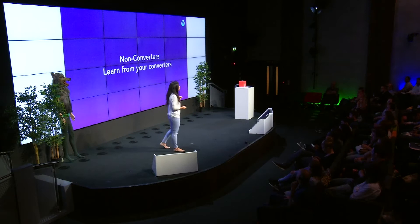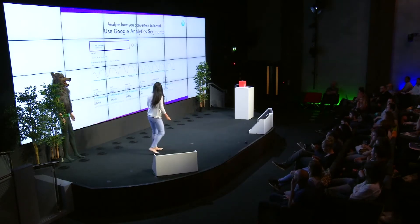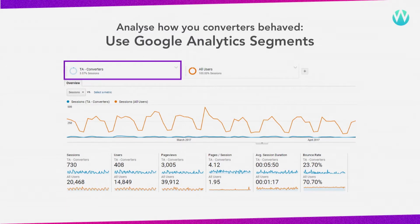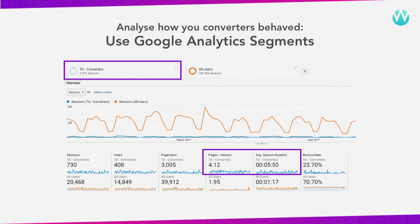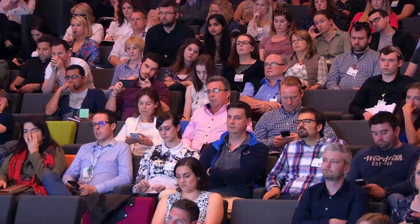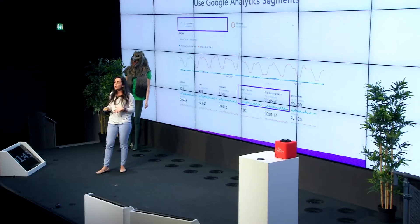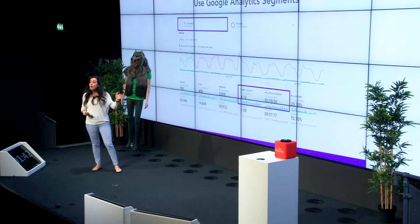Let's look at your non-converters first. The truth is that people can go to your website and never come back. So how do you find your real valuable users here? You need to start learning from your converters. Start using Google Analytics segments. In this example, we have created a segment for users who converted, and we're using it to compare how they behave differently from the average user. You will see that converters actually spend way more time on the website and view way more pages than the regular user. So maybe, rather than creating a non-converting audience, you might want to create an audience of users who behave in a similar way but did not convert yet.